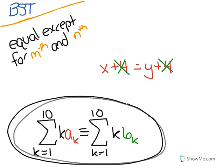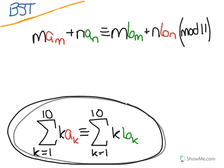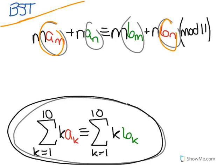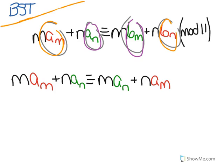So then we're left with M times A sub M plus N times A sub N is congruent to M times B sub M plus N times B sub N. And you'll notice that these are the same color because they're the same digits. We said that A sub M equals B sub N, and A sub N equals B sub M, because they're switched. So then since they're the same, we can just use the same symbol to represent them. So now M times A sub M plus N times A sub N is congruent to M times A sub N plus N times A sub M.